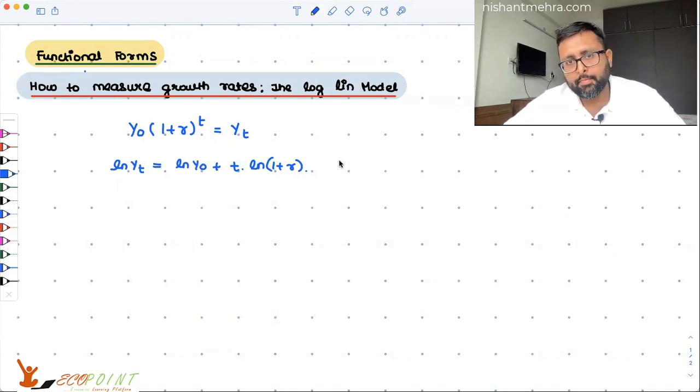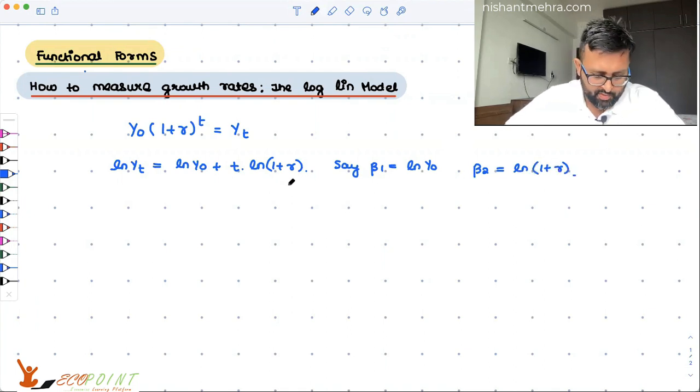So say beta 1 is log of y0, and beta 2 is log of (1 plus r).